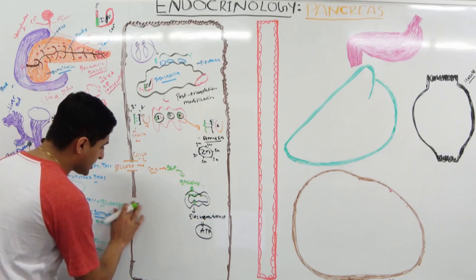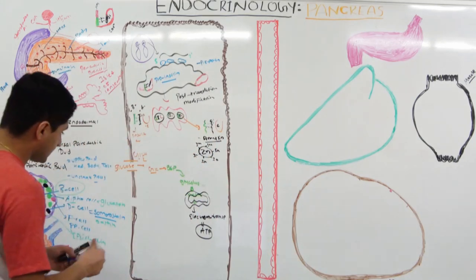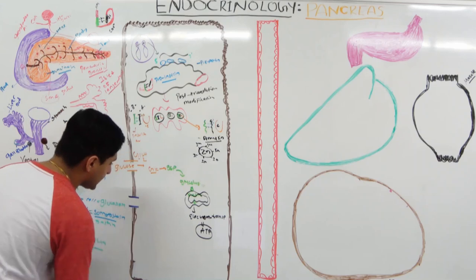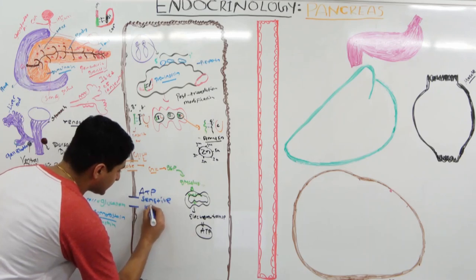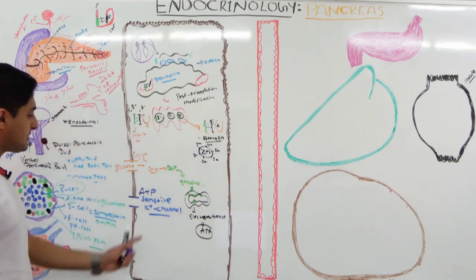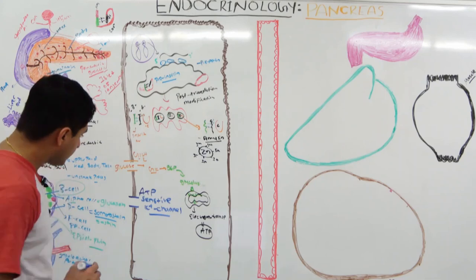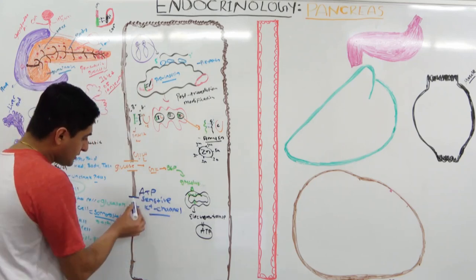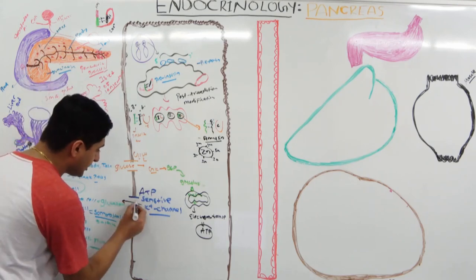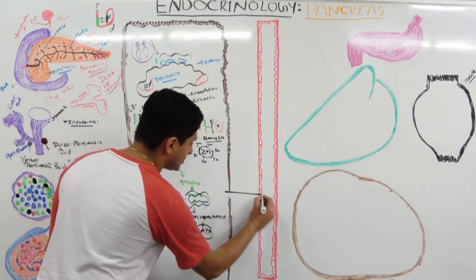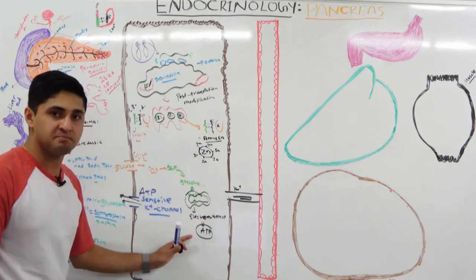The beta cells have a very important channel — the ATP-sensitive potassium channel. When energy is low, these channels remain open and potassium effluxes out to the extracellular fluid. Because cells are bags of potassium with higher intracellular concentration, potassium constantly leaves, making the cell hyperpolarized and less active.